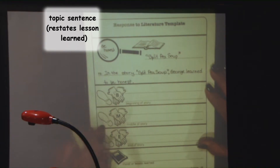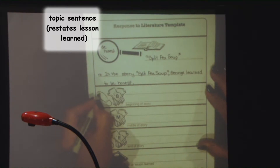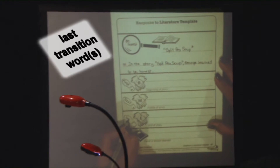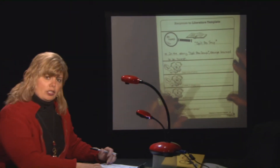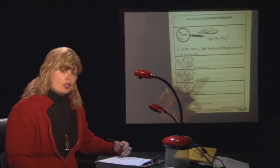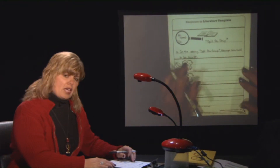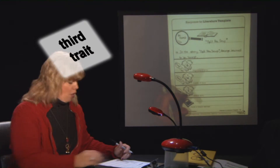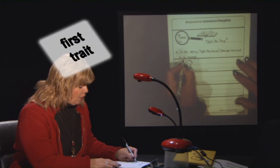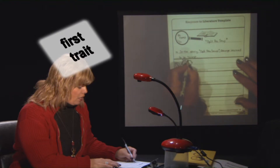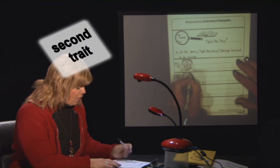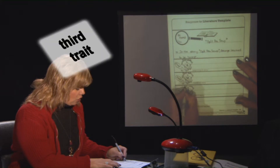Now we're going to move down and put our transition words on our footprint: first and a comma, next and a comma, last and a comma. Looking at our gloves, we remind ourselves those are three words about George during the story. At the beginning, George was friendly and kind. In the middle, George was a little bit scared. And in the end, he became honest.